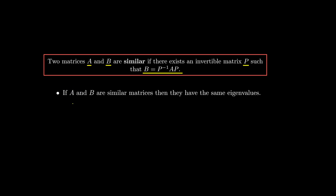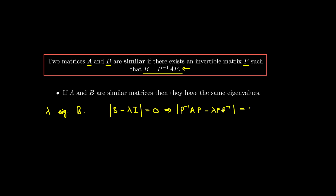Let me give a quick explanation of why that's the case. An eigenvalue — say lambda is an eigenvalue for B — that just means it's a solution to the characteristic equation where I take the determinant of B minus lambda I equal to zero. If B is similar to A, then we can express B in that form. That means we can write P inverse A P minus lambda, and I'm going to write the identity matrix as P times P inverse.